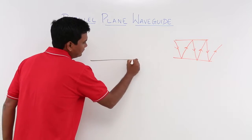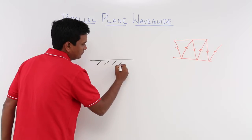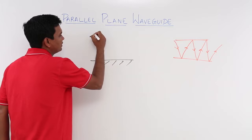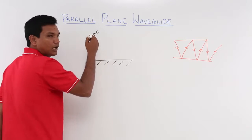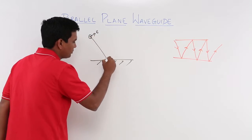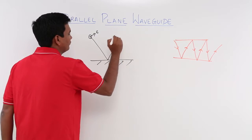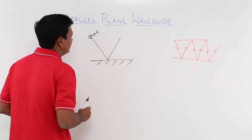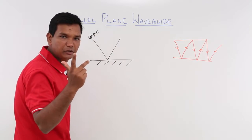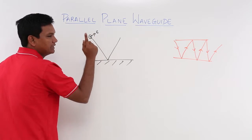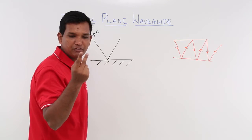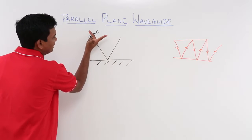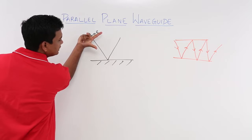Let us assume this is one part of the plate. I have an EM wave for which the electric field is like this, the magnetic field is out of the board, and it is propagating. So it comes, it hits, and it goes. If I take the right-hand rule — the middle finger should point in the direction of the electric field, and the index finger in the direction of the magnetic field — this should be in the direction of propagation.